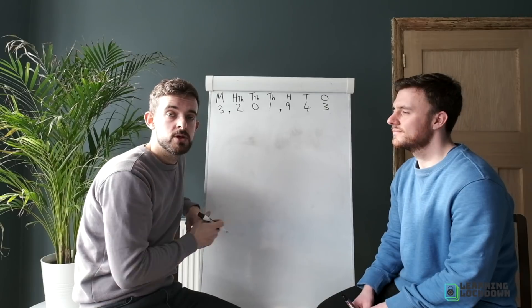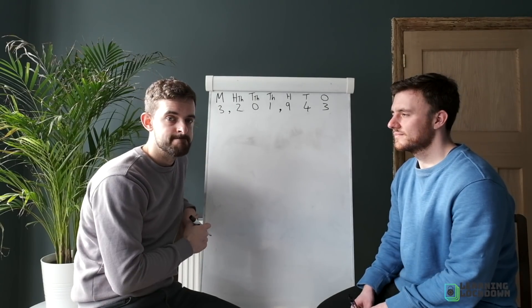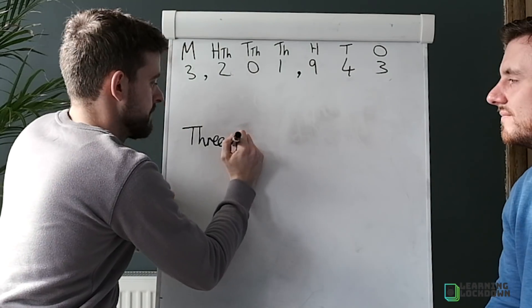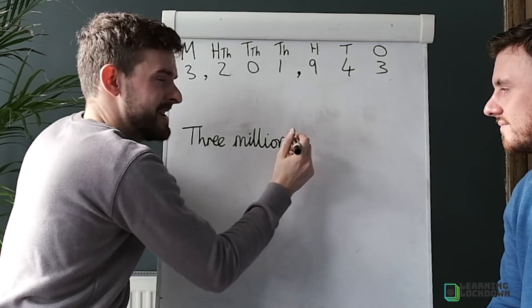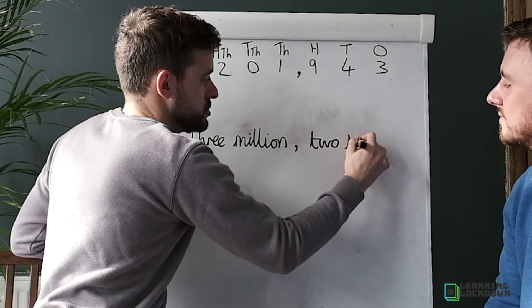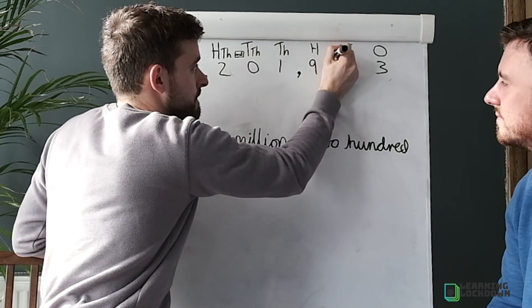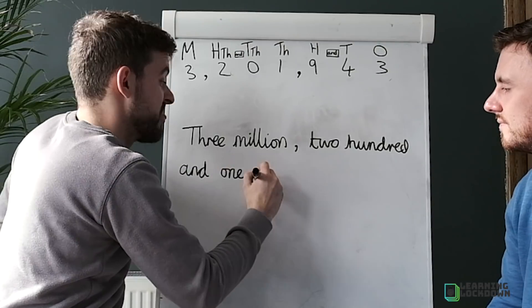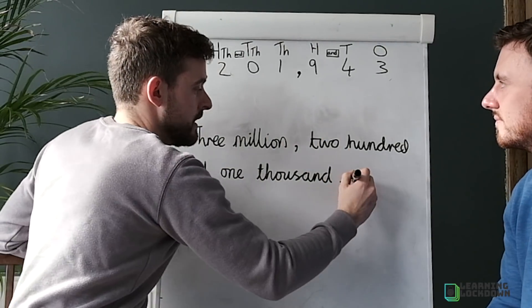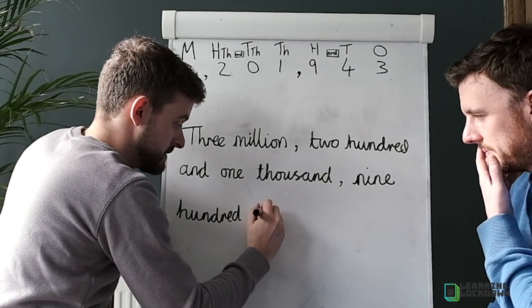Notice how those commas break up our families and make it much easier to read. If you can read three-digit numbers you can read this number — just remember the family names: millions and thousands. Writing it in words: Three million, comma, two hundred and one thousand, comma, nine hundred and forty-three. It gets very long but just write what you see.